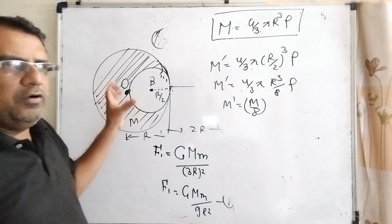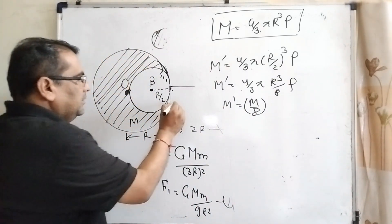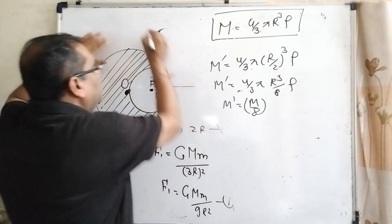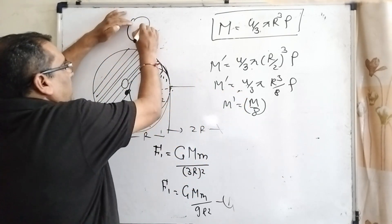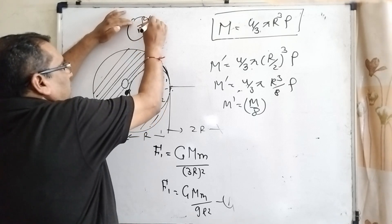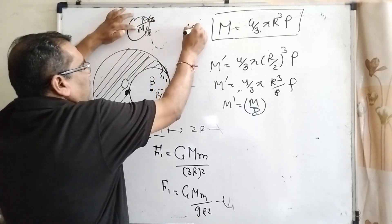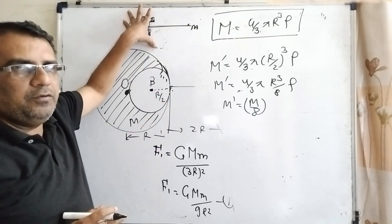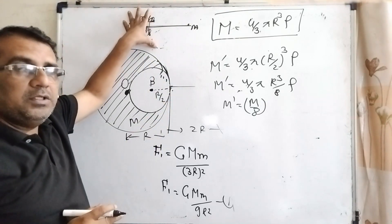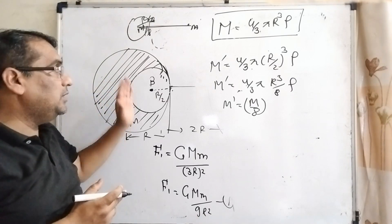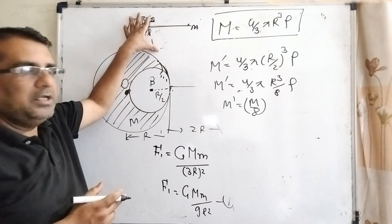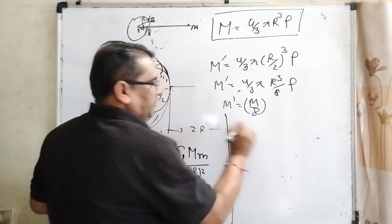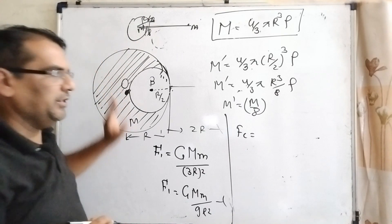Okay, so let us consider for a while. The solid attraction force between this and this particle, this M by 8 and R by 2 radius of the sphere and this particle m. And find out this gravitational force and this force is in the negative direction. Why? Because it is a cavity, it is not actually solid. So therefore, for a while we have to find out Fc.